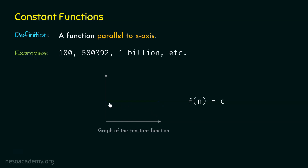Assuming that this function is f(n) and n represents the size of the input, it is equal to c, which is some constant. It can be 100, maybe 1 million, maybe 1 billion — it does not matter, but it is a constant. This means that it does not depend on the size of the input. As the size of the input increases, the constant function remains as it is, and therefore these functions are parallel to the x-axis.